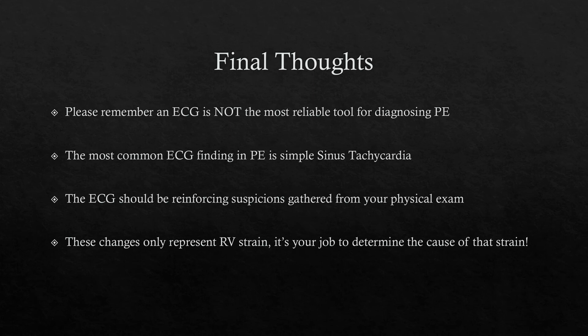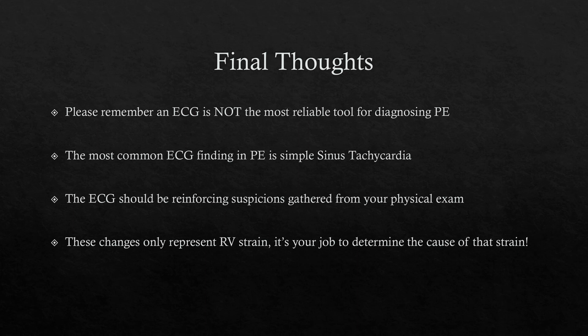My final thoughts: diagnosing PE is important, but an ECG is just ink and paper — you have to look at your patient. If you see these findings and your patient is awake, alert, and oriented with no symptoms, they probably don't have a PE. But if the patient has risk factors — smoking history, birth control use, recent surgery — and presents with chest pain, difficulty breathing, and clear lung sounds, you need to consider it. Point-of-care ultrasound is interesting here because you may be able to see RV dilation on POCUS. For now, we're left with the EKG and physical exam.